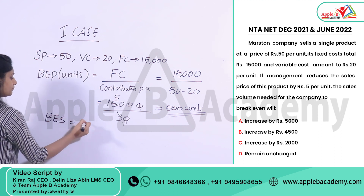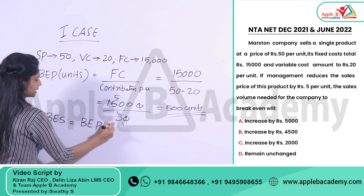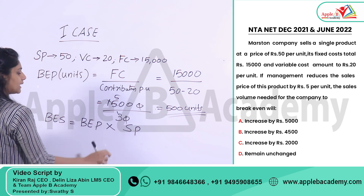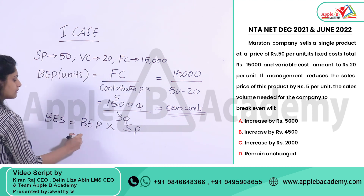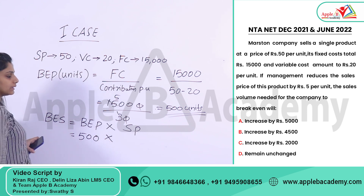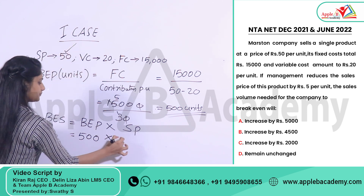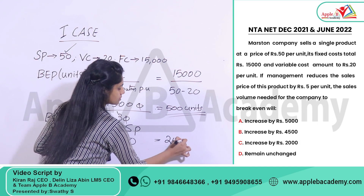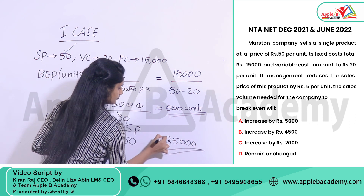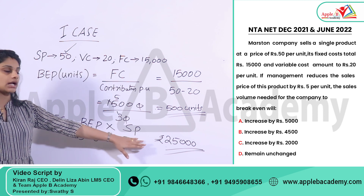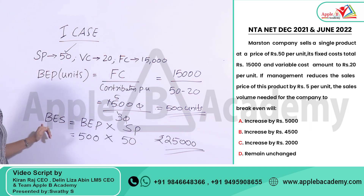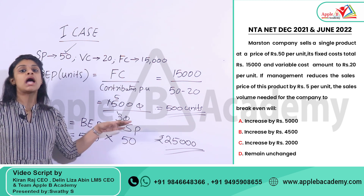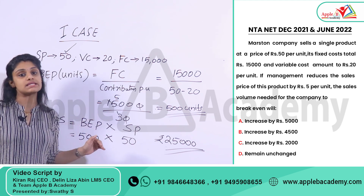We need to get the break-even sales value. Break-even sales equals Break-even point in units multiplied by selling price. So, 500 multiplied by Rs.50 equals Rs.25,000. That is the break-even sales in the first situation. Now we will calculate the second situation and take the difference.